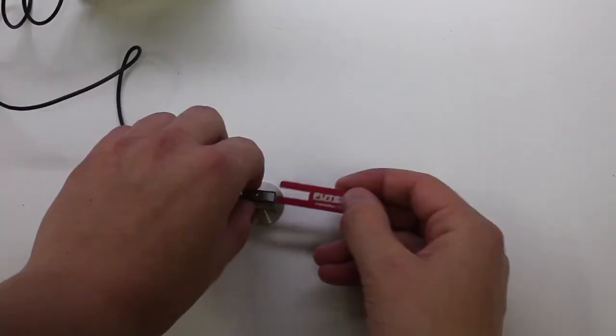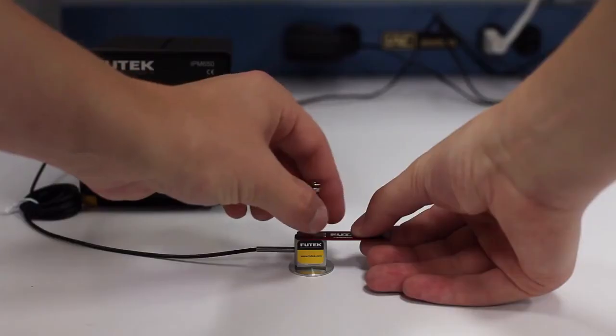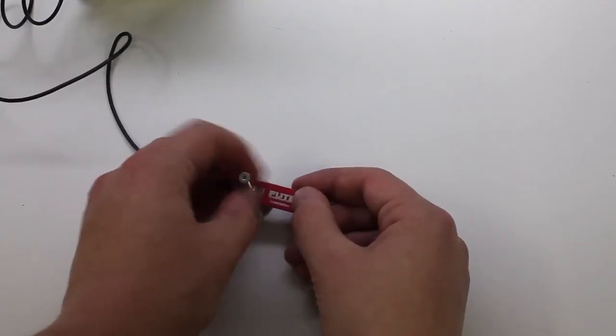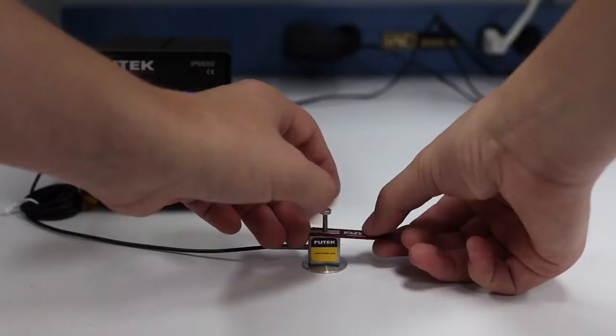Next we will use a lock nut to fasten this bolt to our sensor. First screw in the attachment, then tighten the nut, all while keeping the sensor in place with the installation tool.